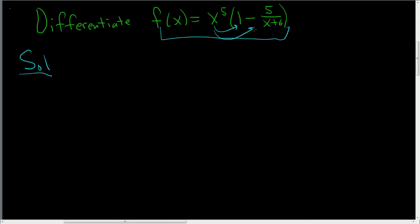Let's first distribute the x to the fifth, so you get f of x equals x to the fifth minus 5x to the fifth over x plus 6. So all we've done at this point is distribute this to both terms here. You see this piece here? Here, we have to use the quotient rule.